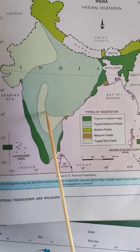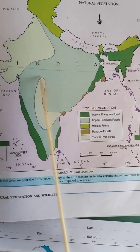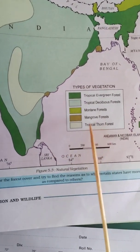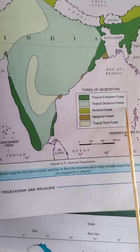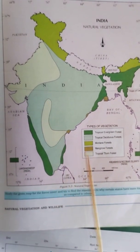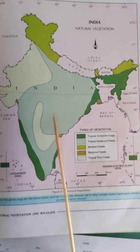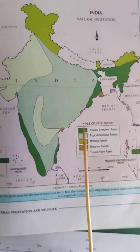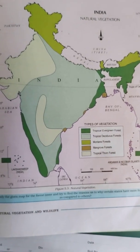Most of the rest of India you will find Tropical Deciduous forest. This will come for identification — they will not ask you to mark it in a separate map, you just need to identify it. That is all about the geographical map pointing.